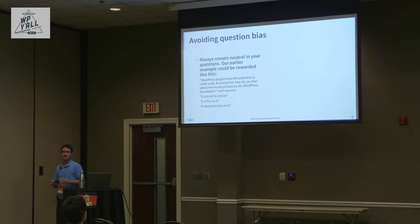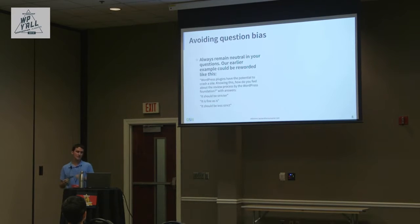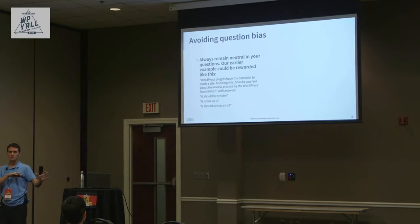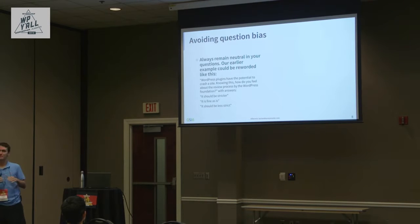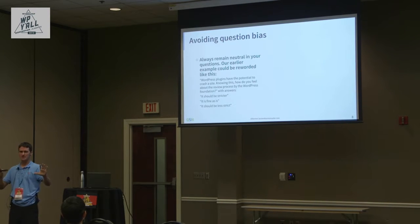Here's that plugin question reworded to reduce bias: 'WordPress plugins have the potential to crash a site. Knowing this, how do you feel about the review process by the WordPress Foundation?' with options: 'it should be stricter,' 'it's fine as is,' or 'it should be less strict.' Instead of assuming everything is bad and demanding agreement, it states a fact and asks for the user's neutral opinion.